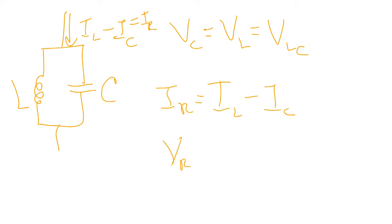So IR is equal to IL minus IC. So this is voltage from the resistor over the resistance is equal to voltage across the inductor, which we know is VLC over X sub L minus V sub LC over X sub C. We can now factor this. So VR over R is equal to VLC times 1 over X sub L minus 1 over X sub C.